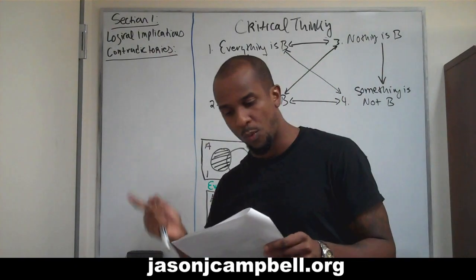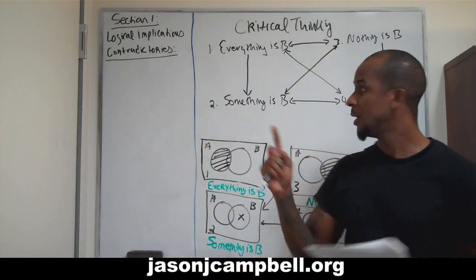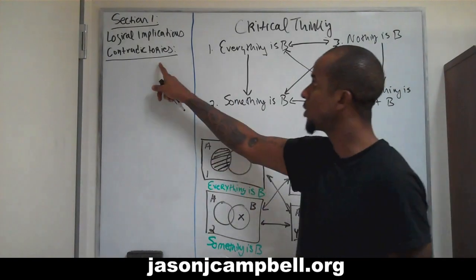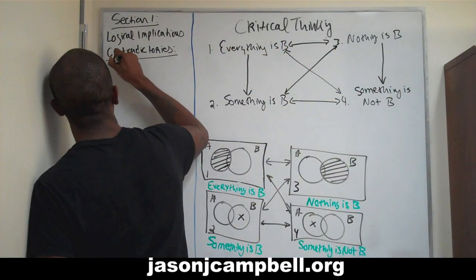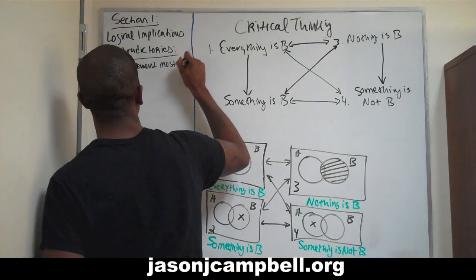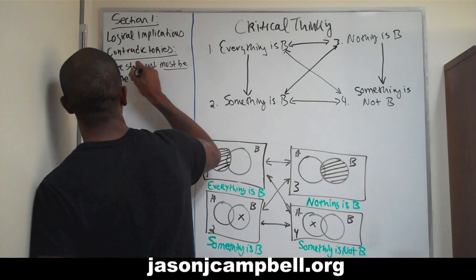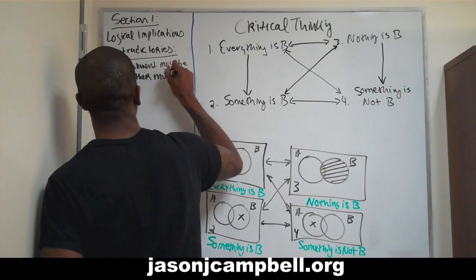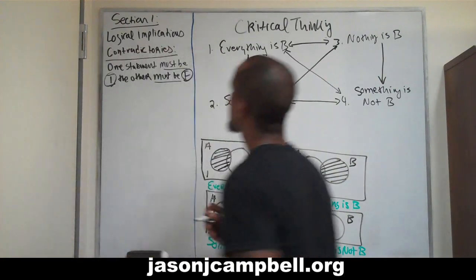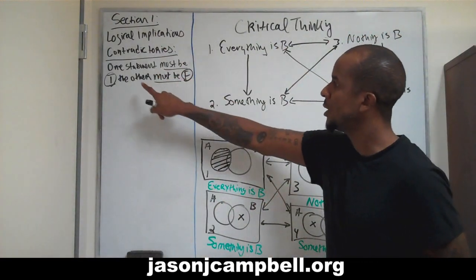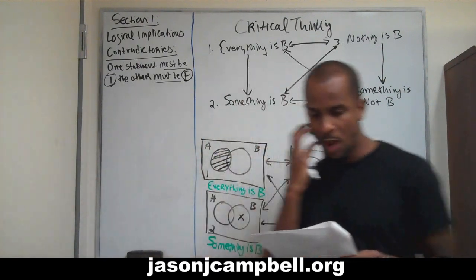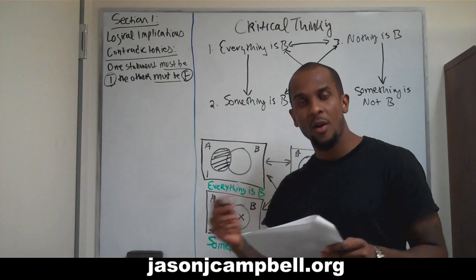When we're talking about contradictories, one statement must be true and the other must be false. I can't have two true statements, I can't have two false statements. So the question is: where are our contradictories? Let's look at number one — if one is true, meaning everything is B, then four has to be false.